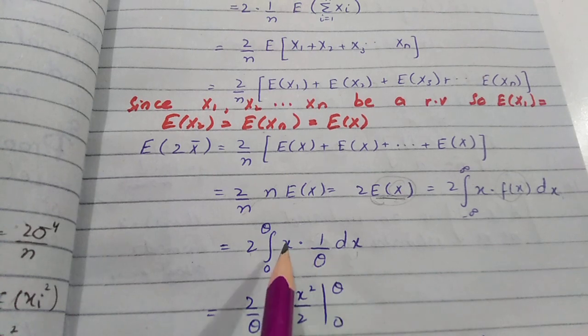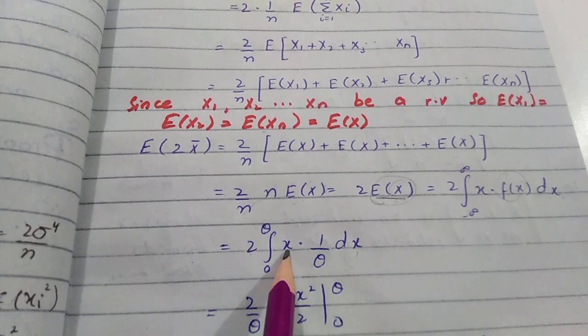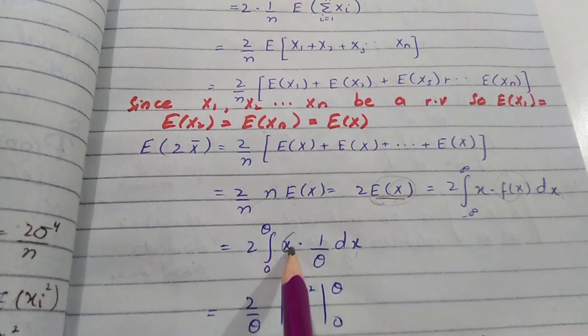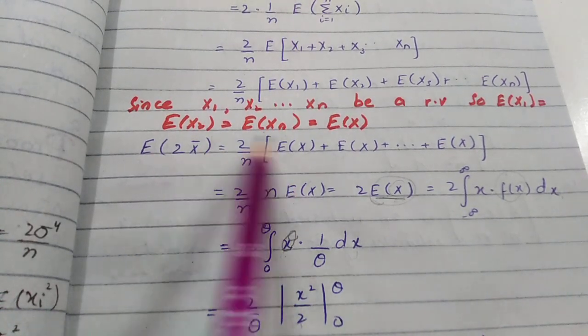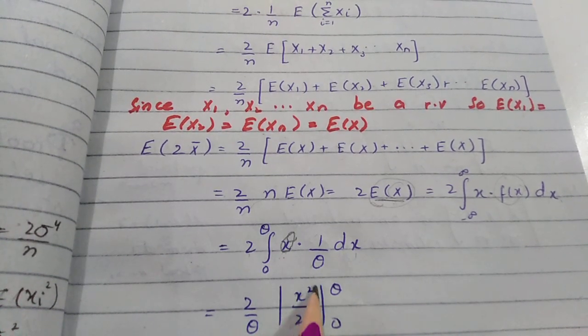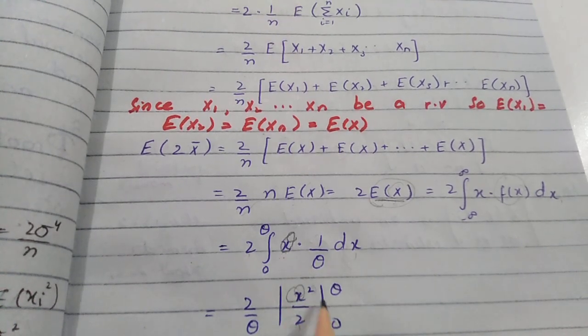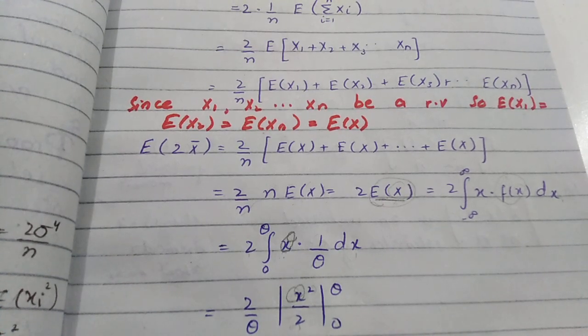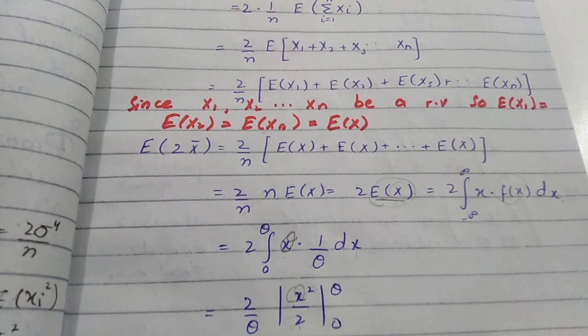When we apply integration to this term, what will happen? We get 2/θ times x²/2. You can write all the terms with θ. Then you can write x²/2, then you can write the limit from 0 to θ. If you want to write the simplification, then it will be θ/2.